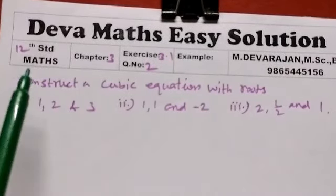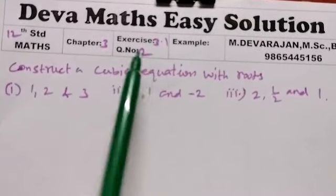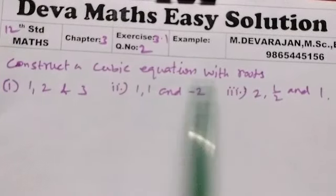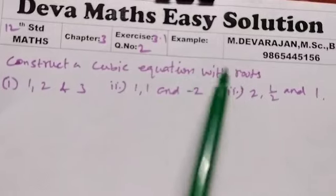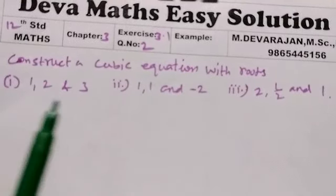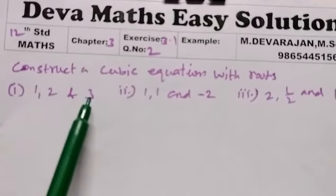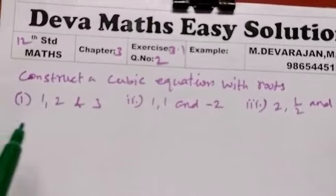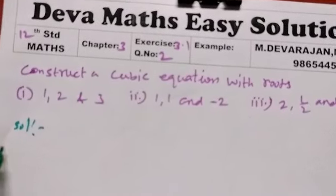Hi students, this is incredible. Now we are going to see TACH and MAKS chapter 3, exercise 3.1, question number 2. Consider a cubic polynomial with roots 1, 2 and 3 to find the cubic polynomial with roots 1, 2 and 3.